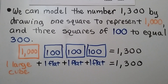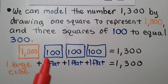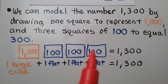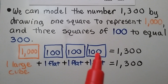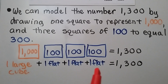We draw 1 square for 1,000 — that's 1 large orange cube. And we make a flat of 100, a flat of 100, and a flat of 100 for the 300. So now we have 1 large cube and 3 flats of 100. That's equal to 1,300.